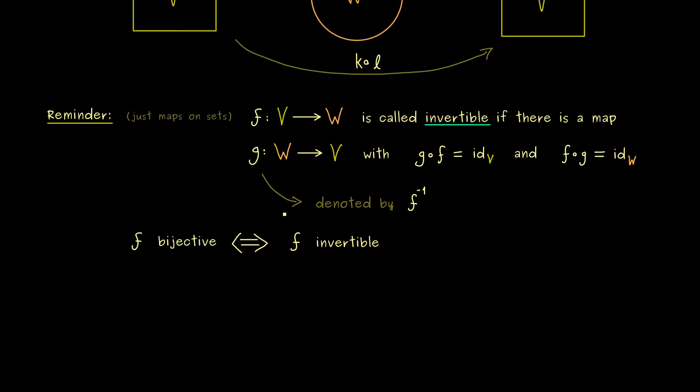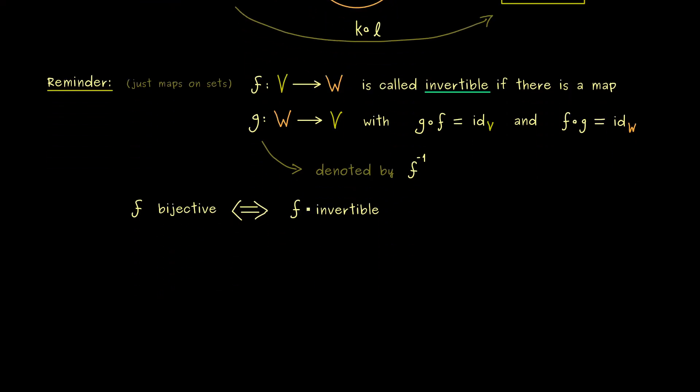Namely, the inverse of a linear map is already linear. In other words, this preserving of the linear structure works in both ways.